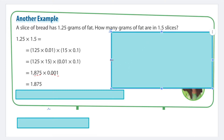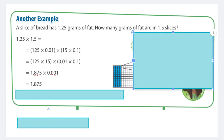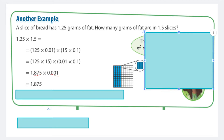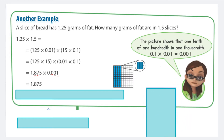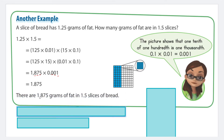I have a hundredth grid diagram showing four tenths — there are 40 squares shaded. Think of it this way: if each square is also divided by 10, then four tenths, equal to 40 hundredths, is also equal to 400 thousandths. This shows that one tenth of a hundredth is one thousandth. So the final answer is: there are one and eight hundred seventy-five thousandths grams of fat in one and five tenths slices of bread.